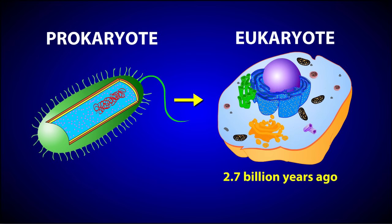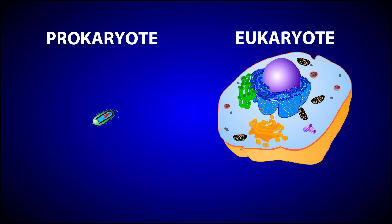If you take a look at prokaryotic and eukaryotic cells side by side, you can see a number of differences. To begin with, prokaryotic cells are a lot smaller than eukaryotic cells and have a simpler structure. But bear in mind that this simple structure is actually a good thing for prokaryotes because it allows them to reproduce very quickly and very effectively.